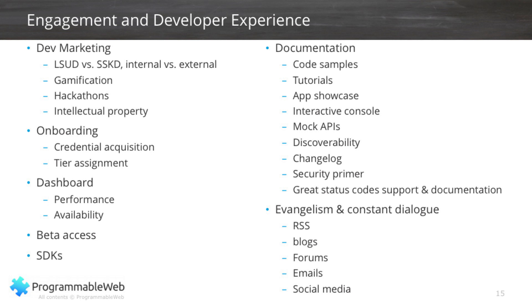Everybody runs beta versions for the next version of the API. What software development kits are you going to offer your developers? Are they for JavaScript, Java, Node.js, Python, or Ruby? You have to decide how you're going to build these SDKs to make it easier for developers in each of those languages, and which languages are most important for consuming your API. That's different from every API provider to every API provider — you have to decide for yourself.